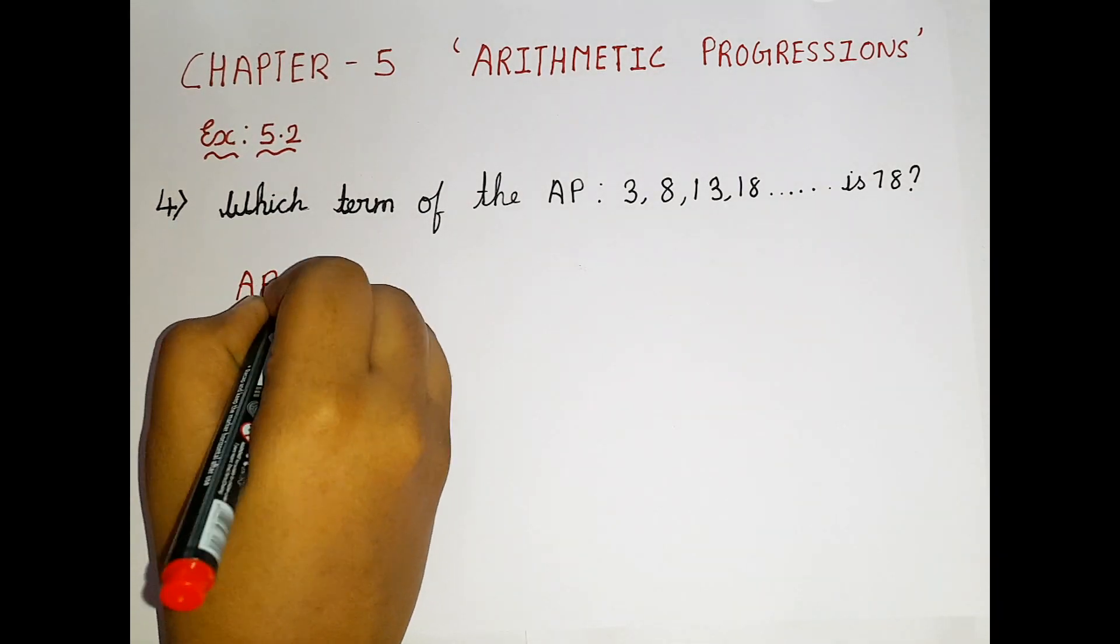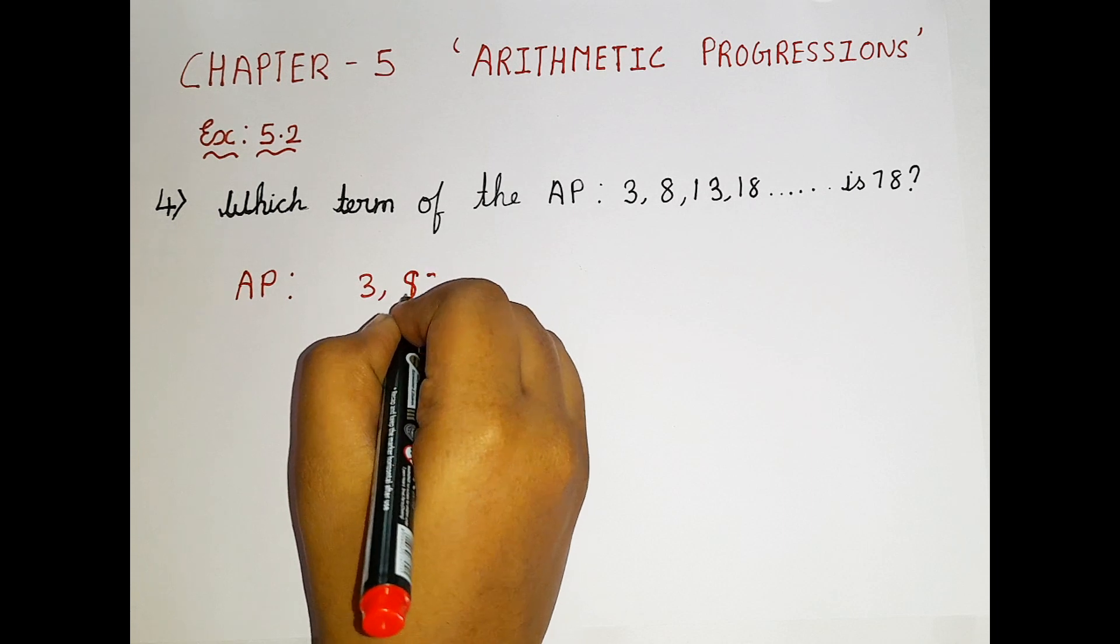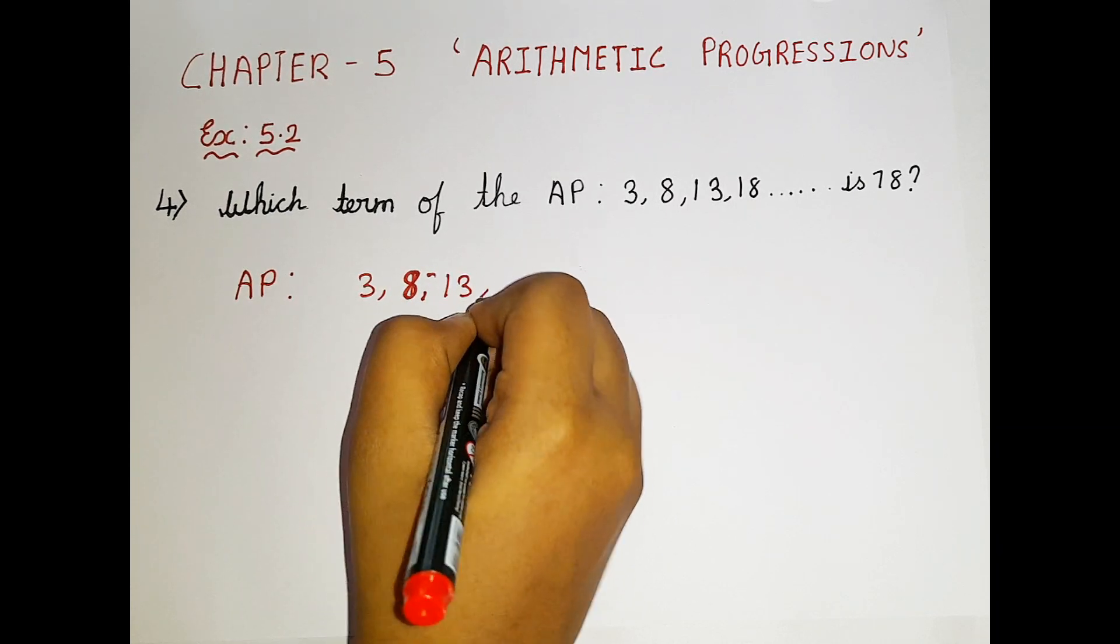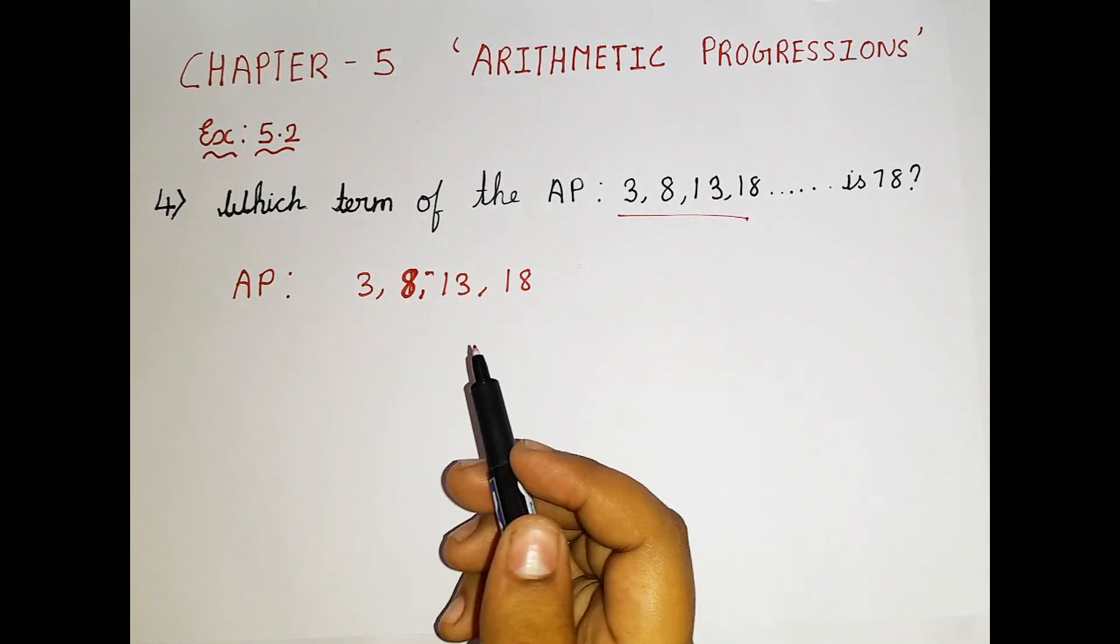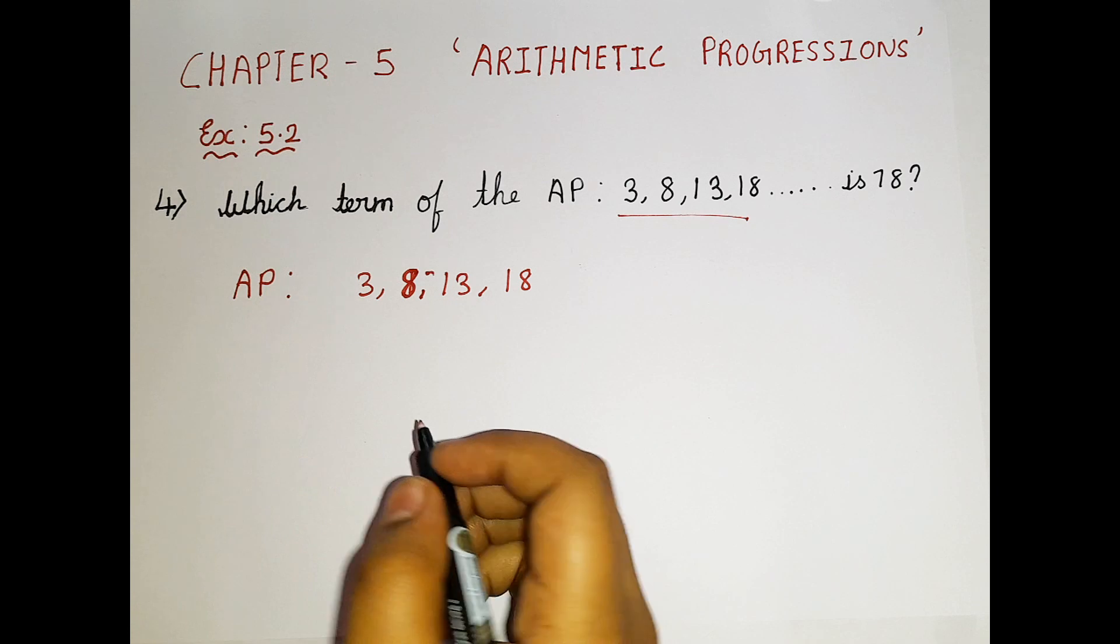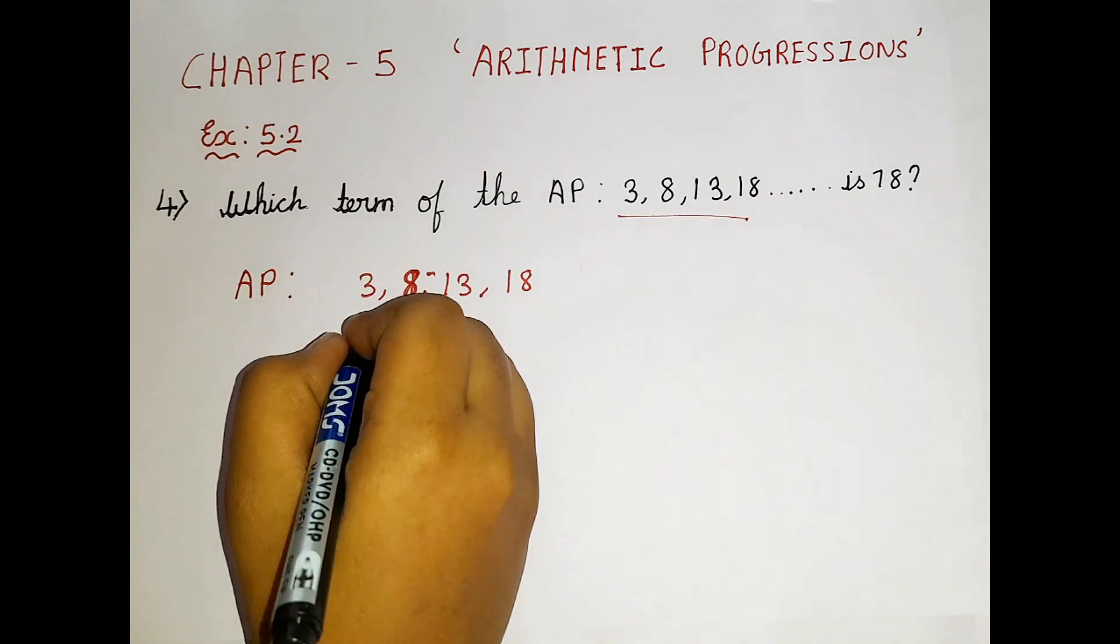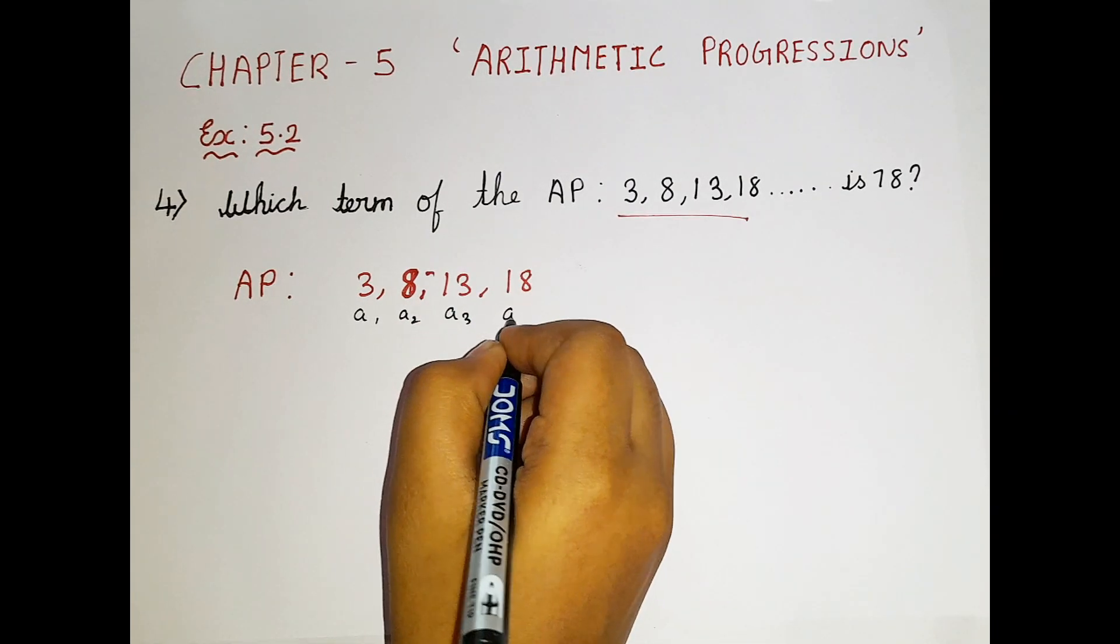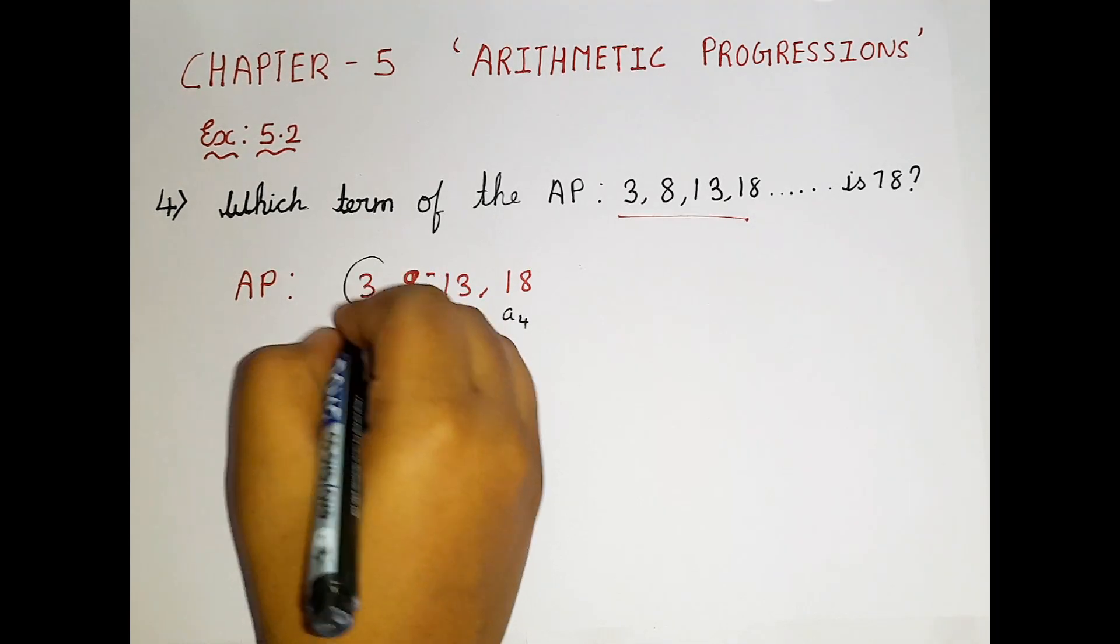The AP is equal to 3, 8, 13, 18. This is the AP. So I just wrote the AP as it is. Now what is the a here? Since you guys know this is the first term, this is the second term, this is the third term and this is the fourth term. Here the a is equal to 3.